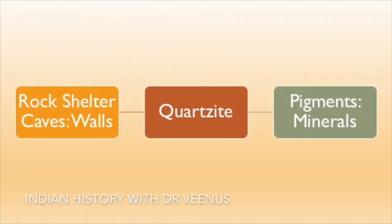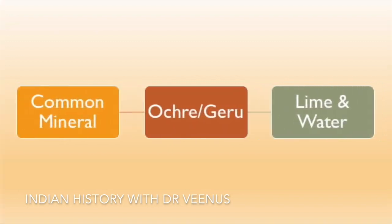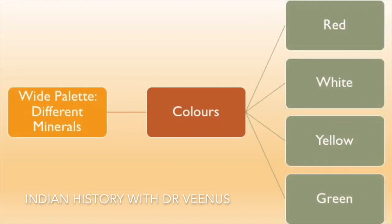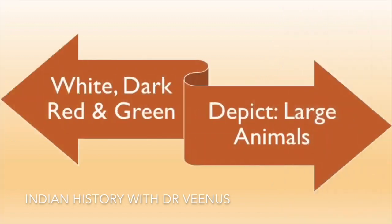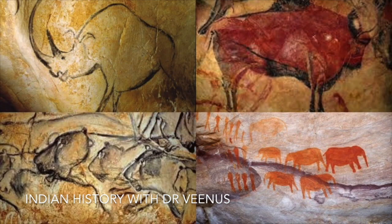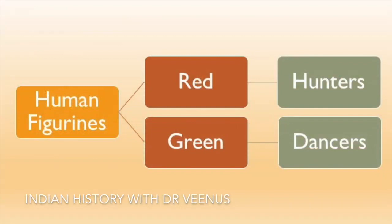The walls of the rock shelter caves were made of quartzite, hence using minerals for pigments. One of the most common minerals was ochre or geru mixed with lime and water. Different minerals were used to make colors like red, white, yellow and green. White, dark red and green were used to depict large animals like bison, elephant, rhino and tigers. For human figurines, red was used for hunters and green mostly for dancers.